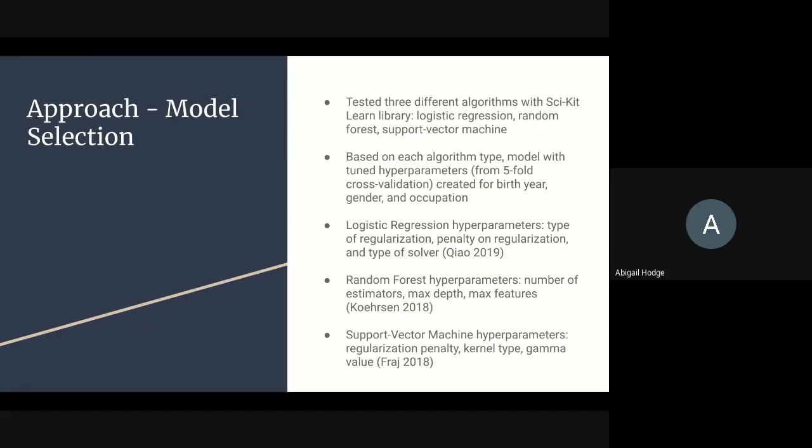I'm going to turn it over to Sam to talk about our models. After feature extraction, we had to select the models to predict the categories we were looking for. We decided to stick with classical machine learning models, including logistic regression, random forest classifier, and support vector machine. Based on each algorithm type, our models were created with tuned hyperparameters using five-fold cross-validation, with a model created for birth year, gender, and occupation. Using resources from journals, we narrowed down three specific hyperparameters for each algorithm. Due to time constraints and a focus on feature extraction, we decided to stick to three hyperparameters for each.